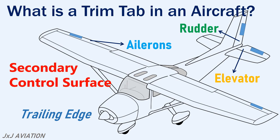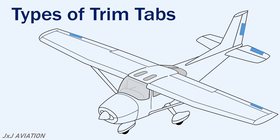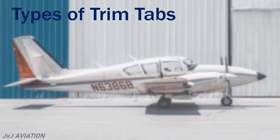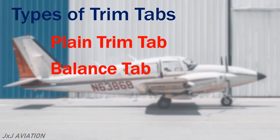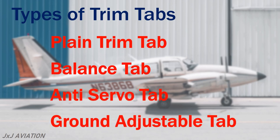There are different types of trim tabs that may be installed on an aircraft depending on the requirement. So let's see the different types of trim tabs and why they are installed. An aircraft may be installed with different types of trim tabs and each tab has a separate function. The different trim tabs are: plain trim tab, balanced tab, anti-servo tab, and a ground adjustable tab. Let's see what are the uses of each of these tabs.